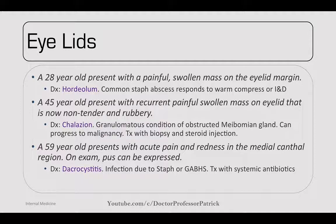A 45-year-old presents with recurrent painful swollen mass on the eyelid that is non-tender and rubbery. This is a chalazion — a granulomatous obstruction of the meibomian gland that can progress to malignancy. Treat with biopsy and steroid injection. A 59-year-old presents with acute pain and redness in the medial canthal region. On exam, pus can be expressed — this is dacryocystitis due to staph or group A beta-hemolytic streptococci. Treat with systemic antibiotics.